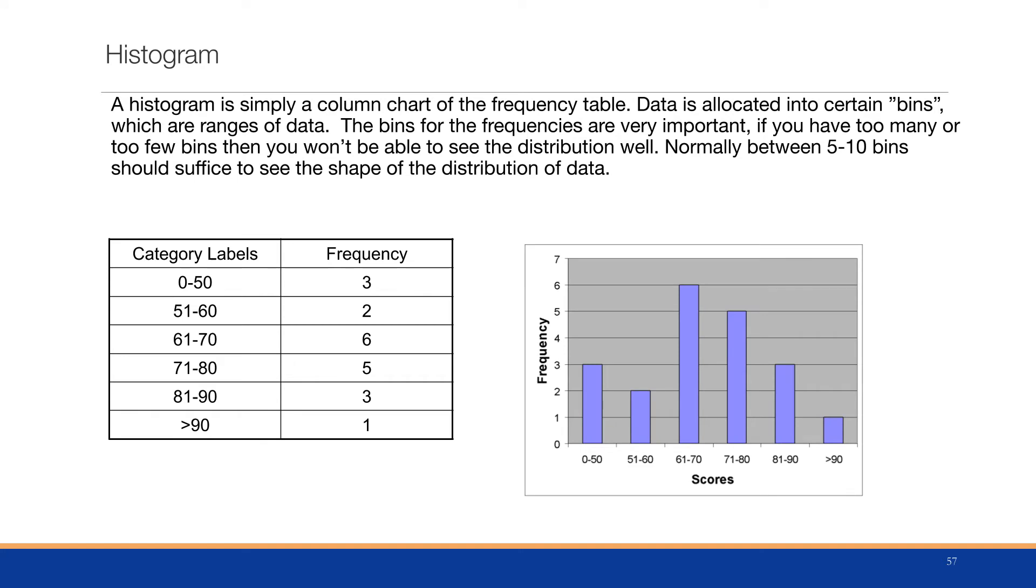A histogram is simply a column chart of the frequency table. Data is collected into certain bins, which are ranges of data. The bins for the frequencies are very important. If you have too many bins or too few bins, you won't be able to see a distribution well. Normally, between 5 and 10 bins should suffice to see the shape or distribution of the data.